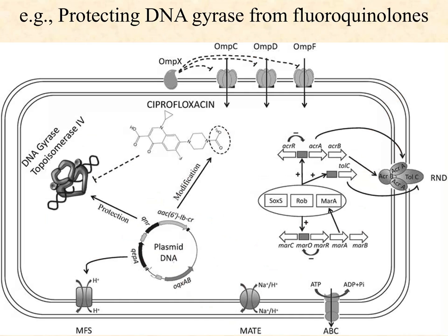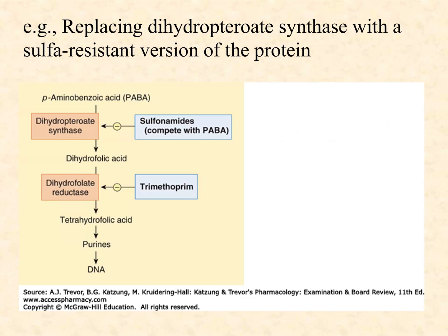A target protection factor example: focus on the QNR gene on this plasmid. The QNR (quinolone resistance) gene produces a protein that binds to the target enzyme DNA gyrase. Fluoroquinolones like Cipro target DNA replication by binding DNA gyrase and knocking it out so bacteria can't replicate their DNA. The QNR protein binds to the DNA gyrase so the gyrase can still function despite the presence of Cipro or another fluoroquinolone — that's what a target protection factor does.